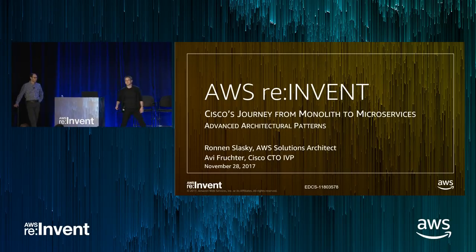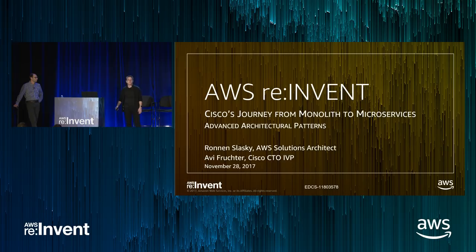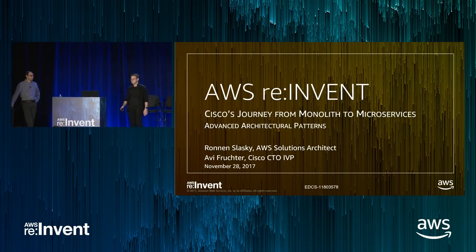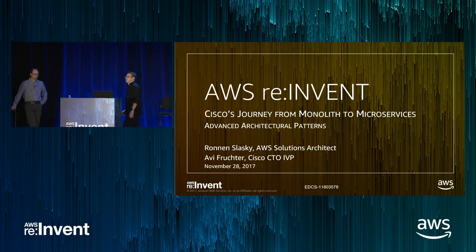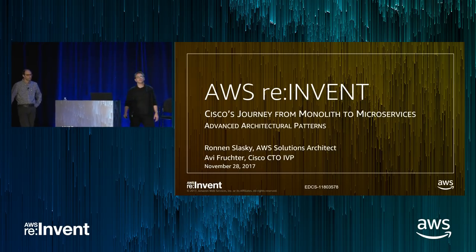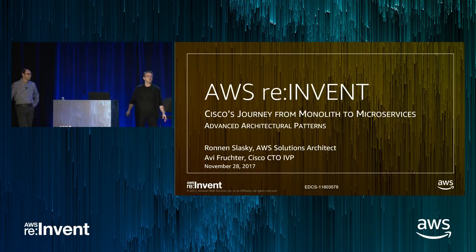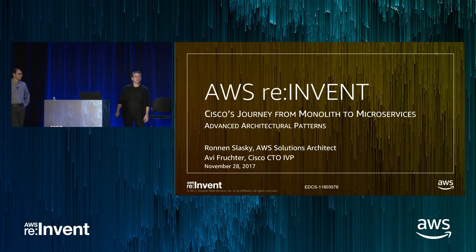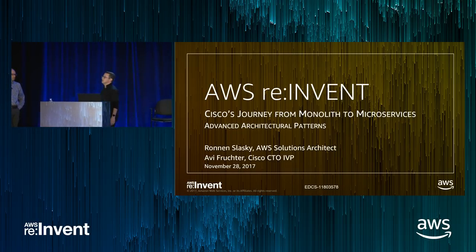Good afternoon. Welcome. If you're here today, I assume you're interested in migrations from monoliths to microservices. My name is Ronan Slasky. I'm a solutions architect at Amazon Web Services, working with global enterprise customers. I've had the privilege of working with Cisco Infinite Video Platform over the past year, helping them with their journey to AWS. Joining me today is Avi Fruchter, the CTO of Cisco IVP.